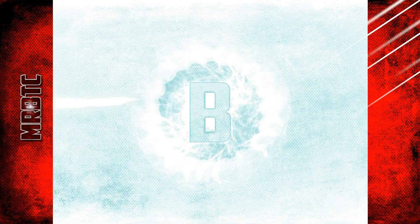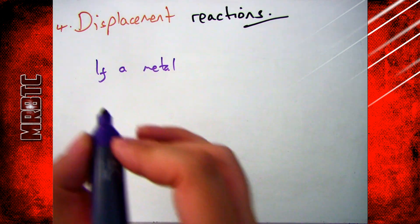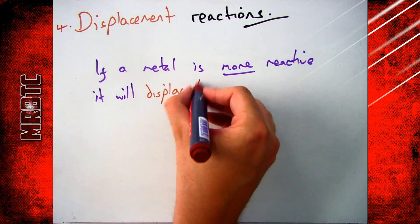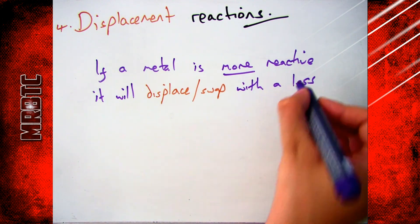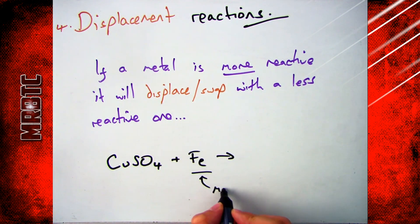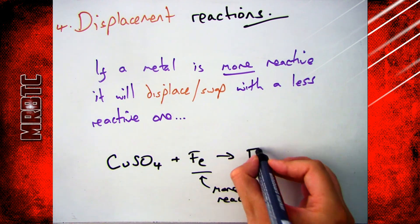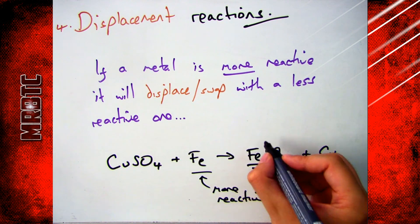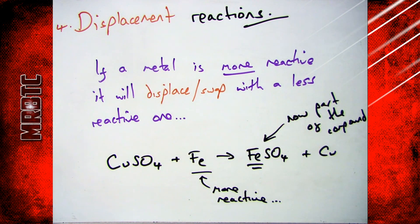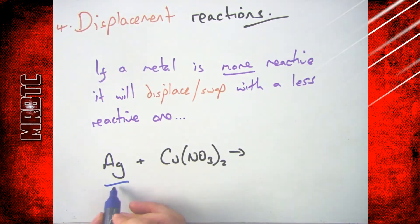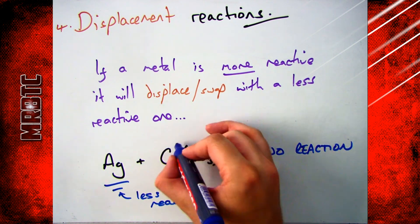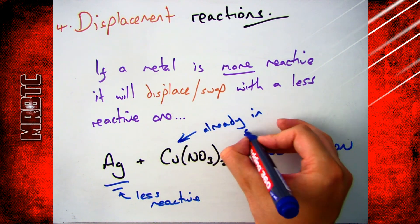The last method is displacement reactions. If a metal is more reactive it will swap places with, or displace, the less reactive metal in a compound. For example, if you have copper sulfate and add iron to it, iron is more reactive and will swap places and become part of the compound. If you add a less reactive metal like silver to copper nitrate there will be no reaction, because the more reactive one is already part of the compound.